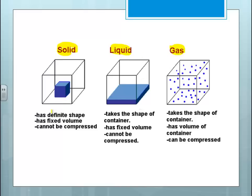We've already talked about this, but solids have definite shape, definite volume, and they typically cannot be compressed. Whereas a liquid will take the shape of its container, has a fixed volume, and cannot be compressed. And a gas will take the shape of its container, has an indefinite volume or will take the volume of its container, and it can be compressed.